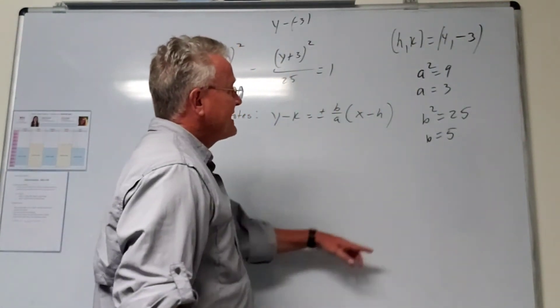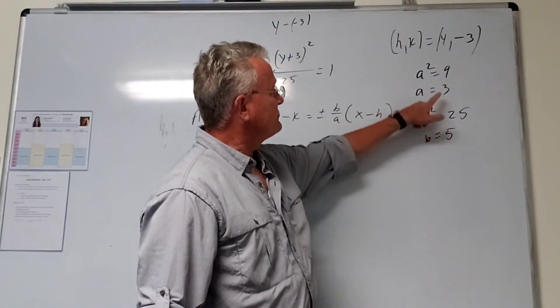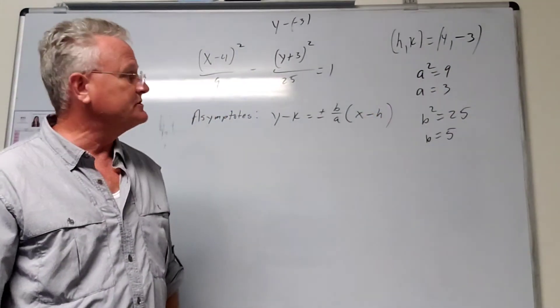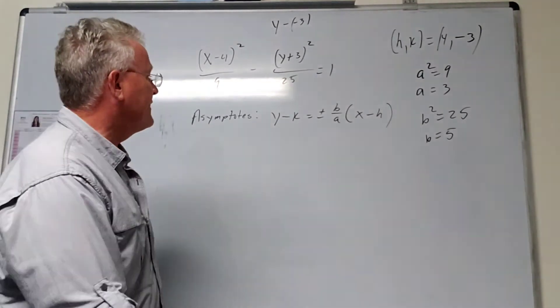Technically there's a plus and minus here when you take the square root, but we have our plus and minus in the formula, so we're not worrying about that.